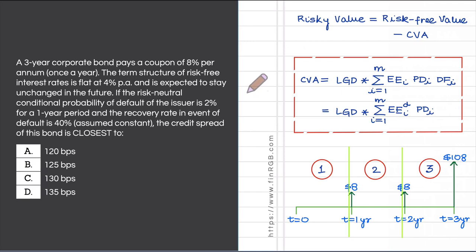In this solved example, we will take a look at how to calculate the CVA — the credit valuation adjustment — for a very simple position, and this position is in a risky corporate bond.